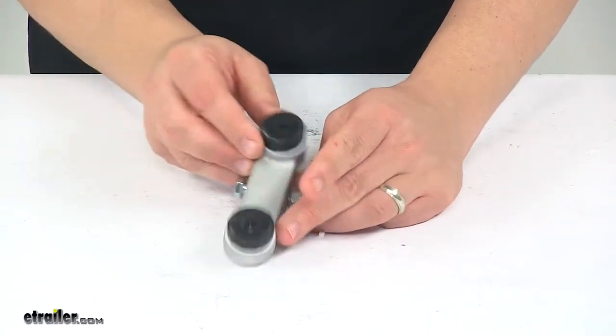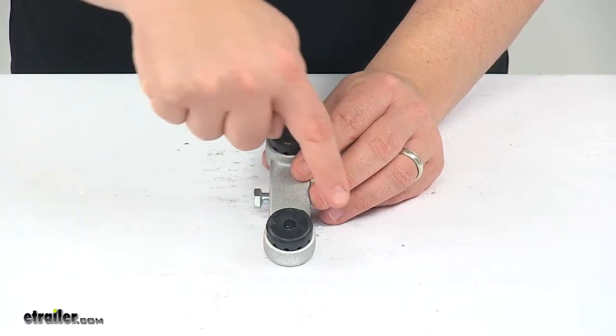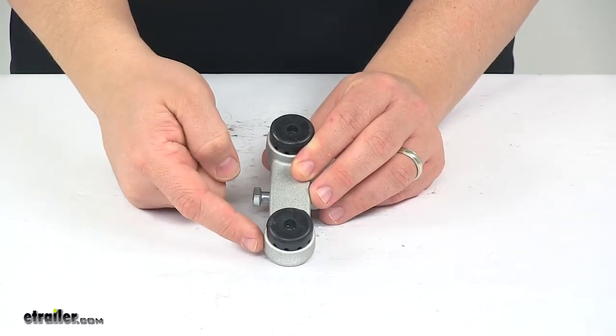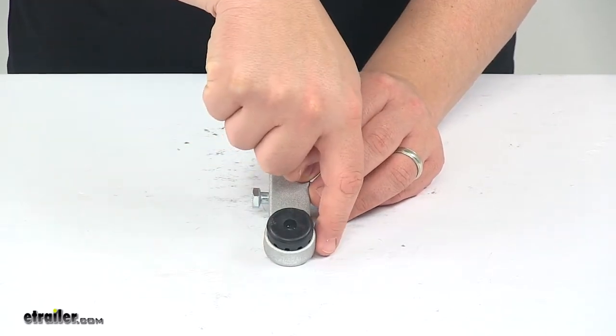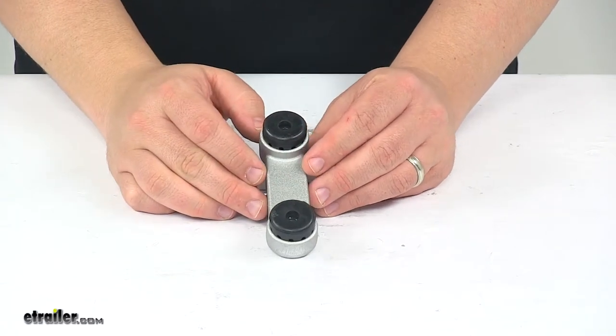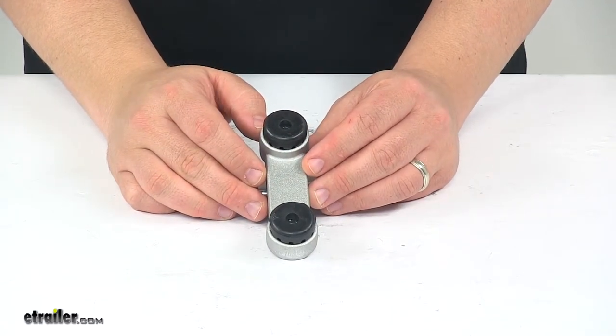I also took a measurement of the width, so edge to edge measuring the edge of the body to the same point on the other side, and got a measurement of one and nine thirty seconds of an inch wide.